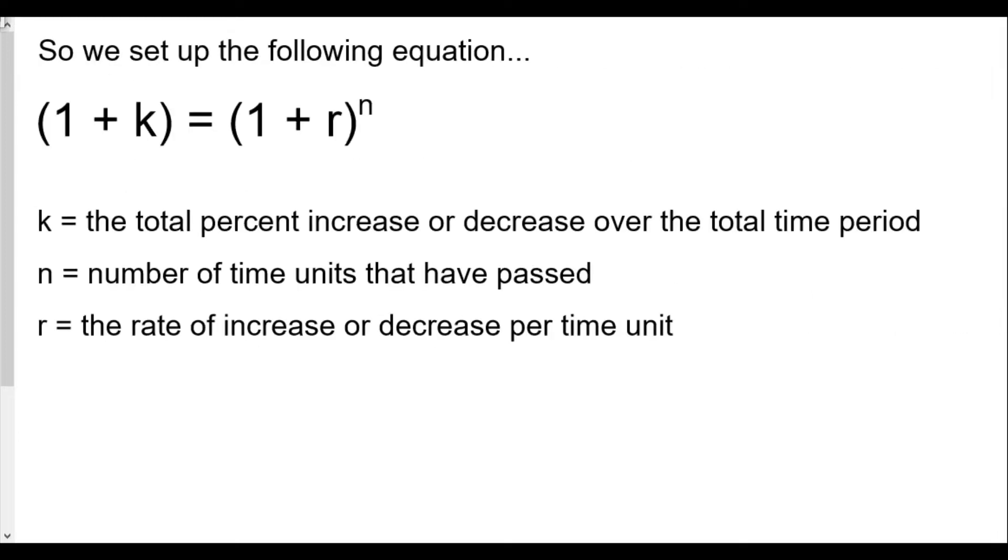So we set the following equation: 1 plus k equals 1 plus r raised to n. k is the total percent of increase or decrease over the total time period. n equals number of time units that have passed, and r equals the rate of increase or decrease per time unit. This will be the basis of how we solve a lot of the equations here for this homework when we're trying to figure out one rate in terms of another.